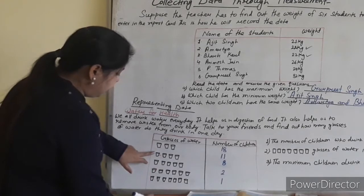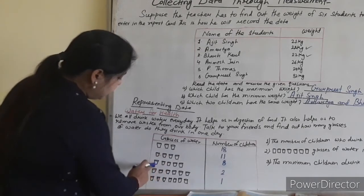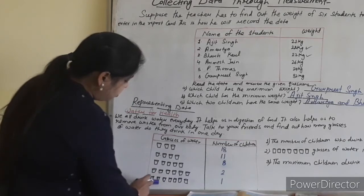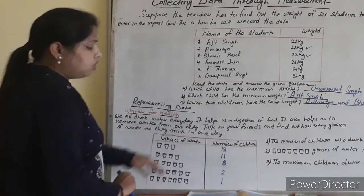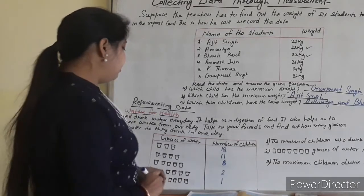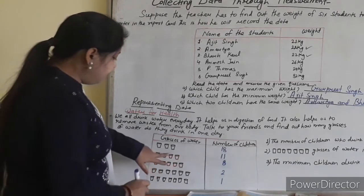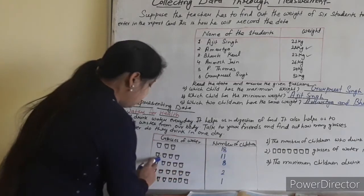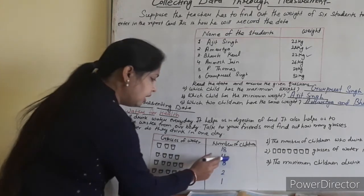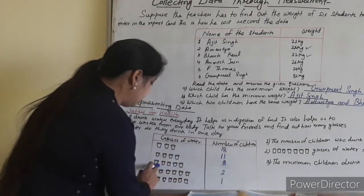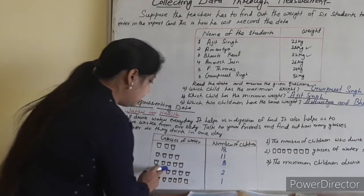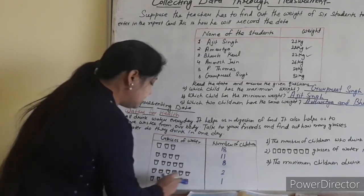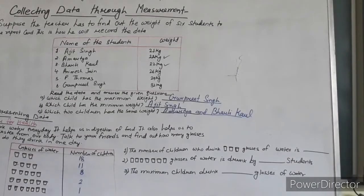First I will draw a rough figure — glasses of water. I will draw three glasses, then four glasses, then five glasses, then six glasses, and the last one is seven glasses. So you have to find the number of children who drink each number of glasses. In my rough figure: three glasses — 18 students; four glasses — 11 students; five glasses — 8 students; six glasses — 2 students; seven glasses — 1 student.